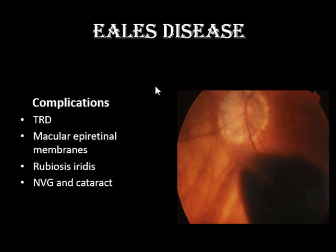The complications of Eales disease: first, in long-standing vitreous hemorrhage, there is development of a fibrous component along with new vessels, which can lead to tractional retinal detachment (TRD). If we do not treat patients at the stage of vitreous hemorrhage — either with laser or with pars plana vitrectomy to remove the vitreous hemorrhage — this can lead to TRD. The second important complication affecting central vision is macular epiretinal membrane.